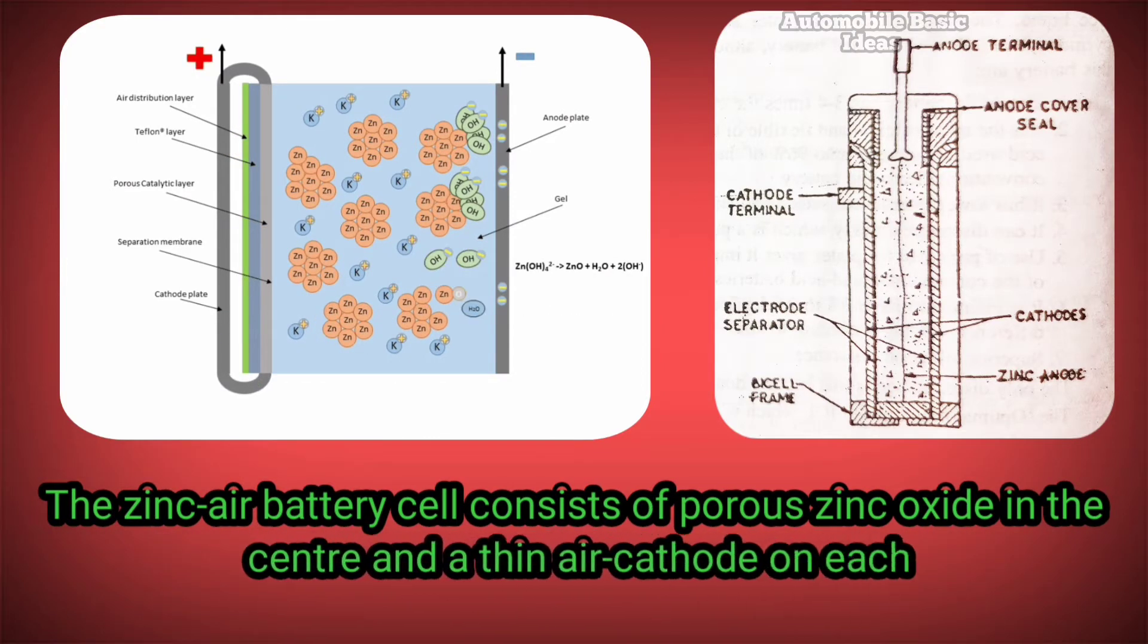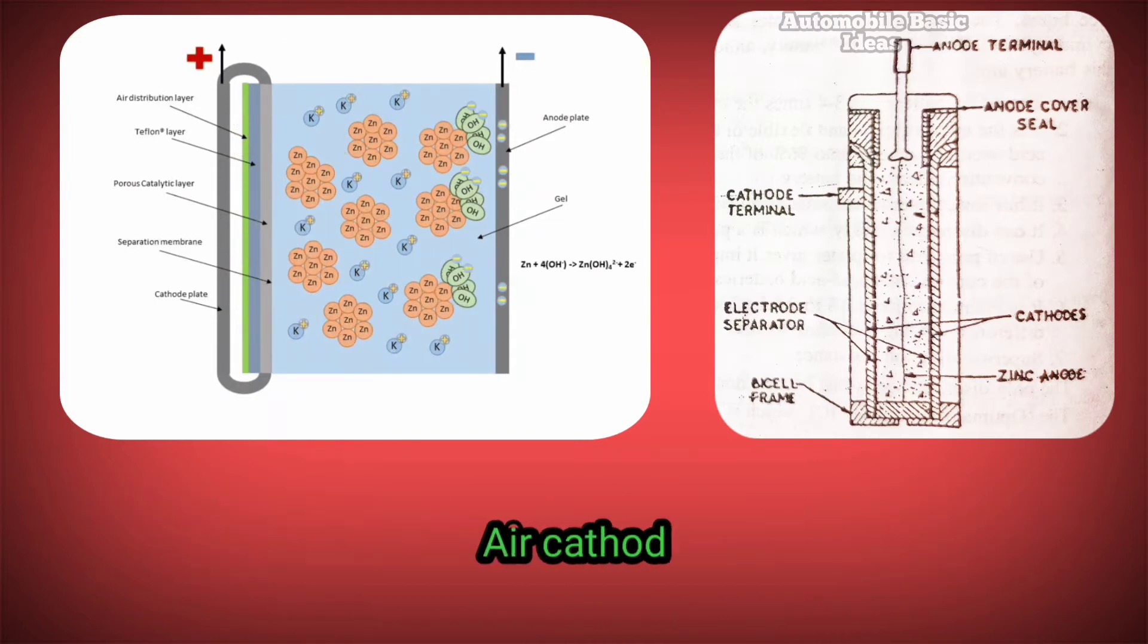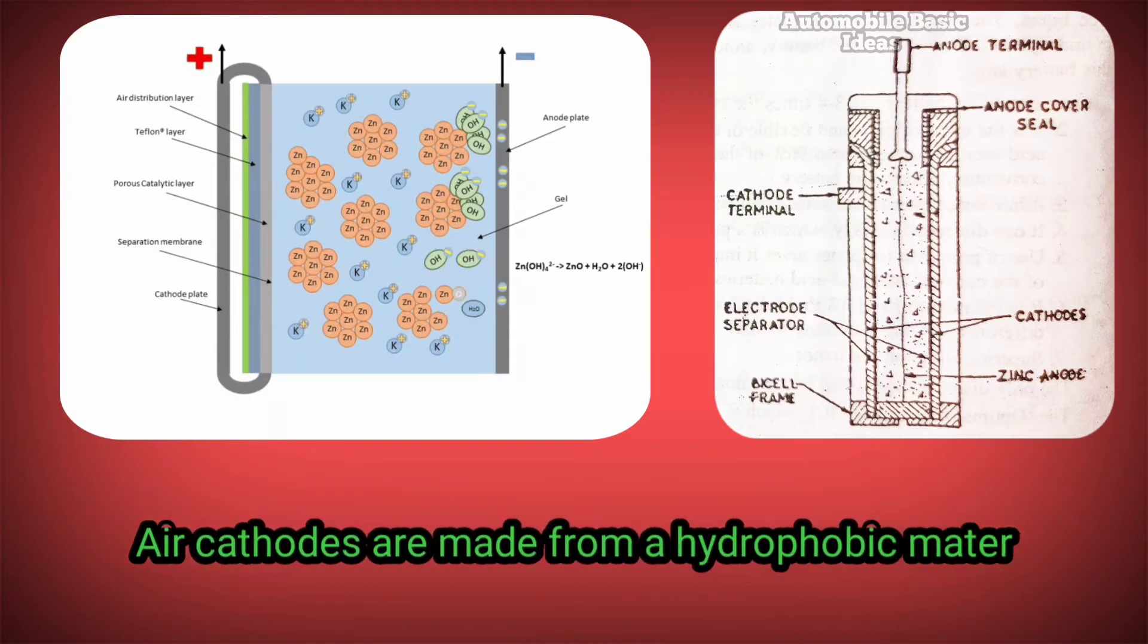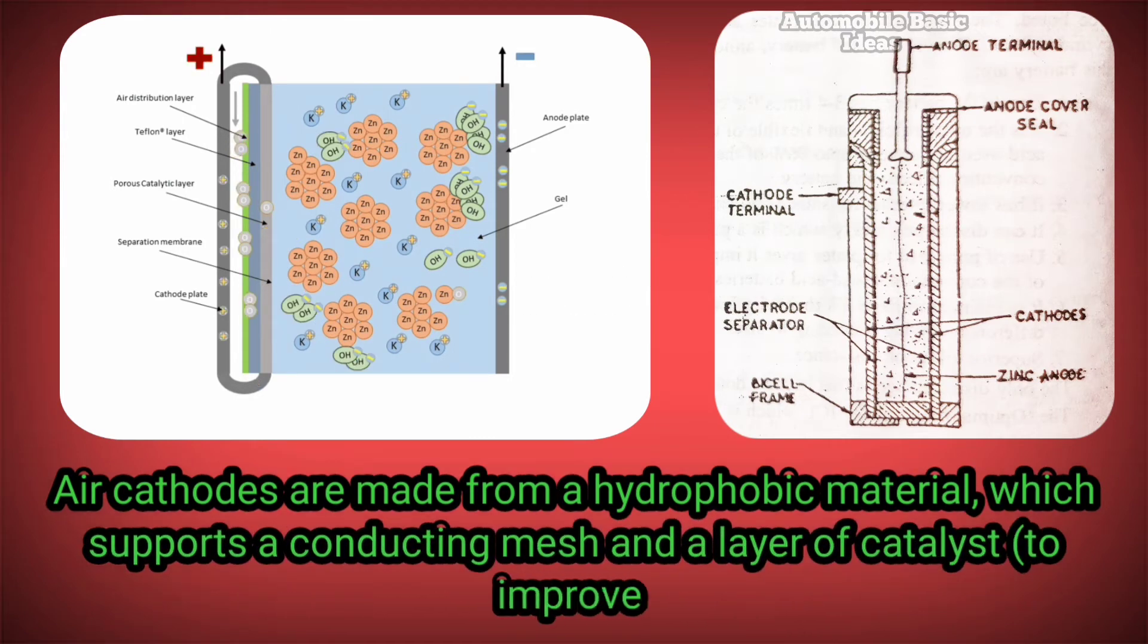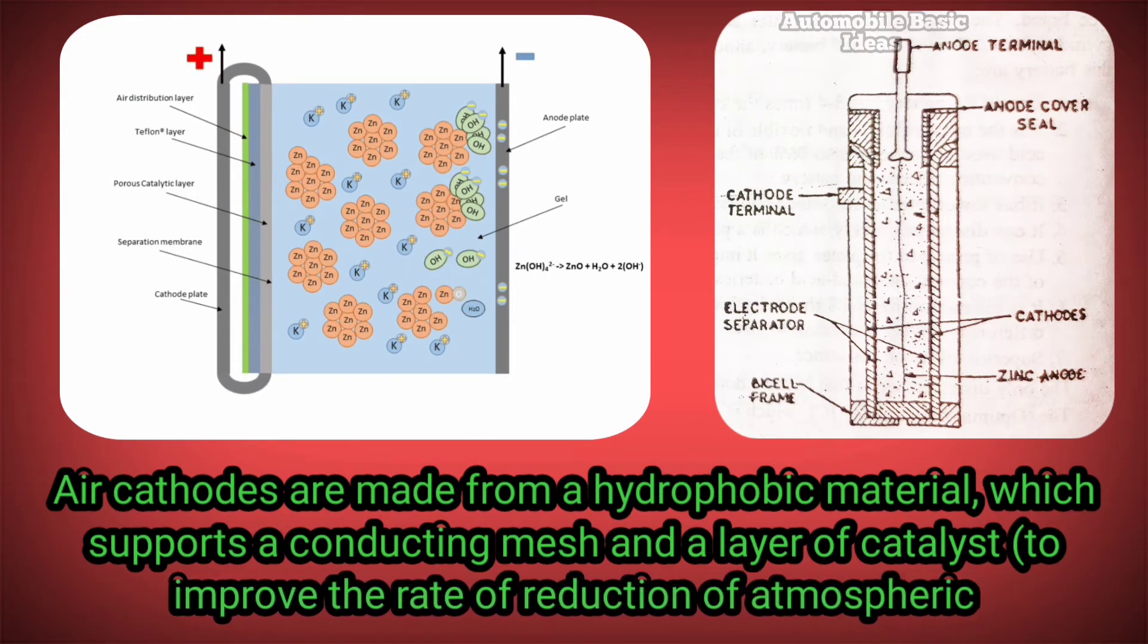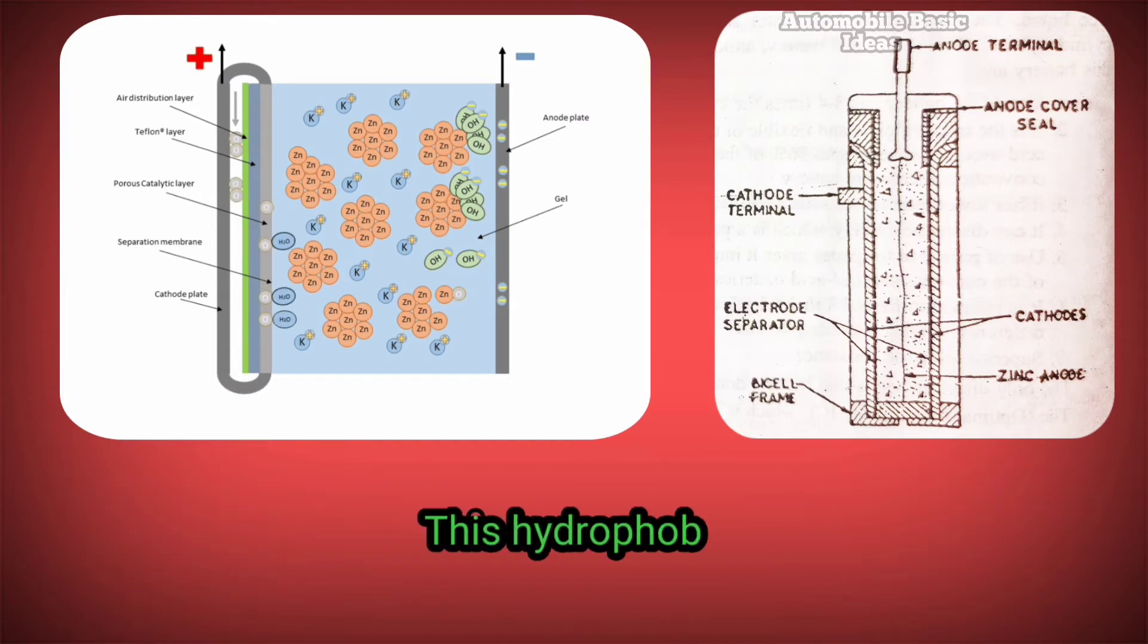and a thin air cathode on each side. Air cathodes are made from a hydrophobic material which supports a conducting mesh and a layer of catalyst to improve the rate of reduction of atmospheric oxygen. This hydrophobic material